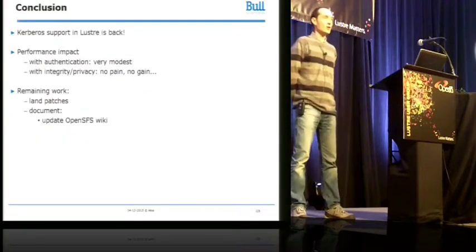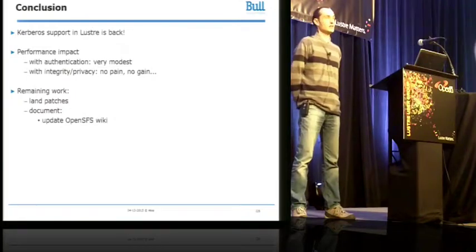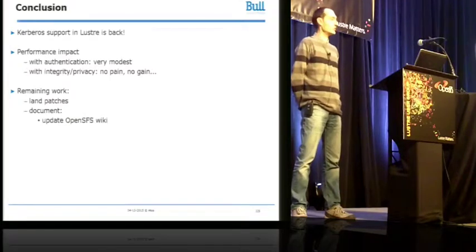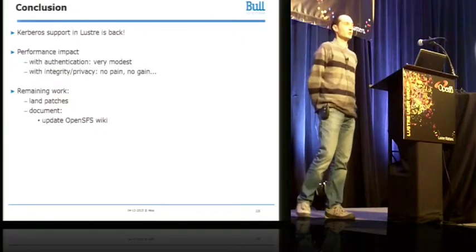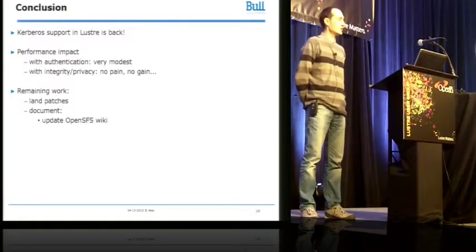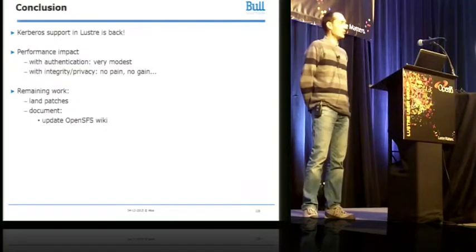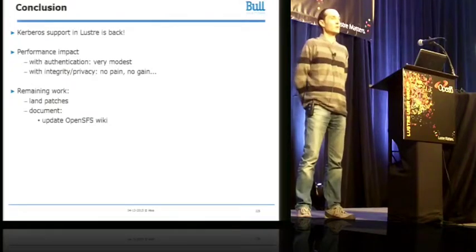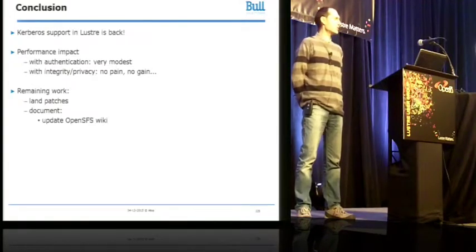In conclusion, the really good news is that Kerberos support is back in Lustre for every Kerberos flavor. Authentication is genuinely usable in a production system because the impact on performance — both data and metadata — is very modest. When it comes to integrity or privacy, no pain, no gain, so those modes do hurt performance. There is still work to do: landing patches that are still being reviewed, and possibly updating the documentation — the Lustre wiki and the Lustre operations manual — to reintegrate Kerberos documentation that has been absent since around Lustre 1.8.